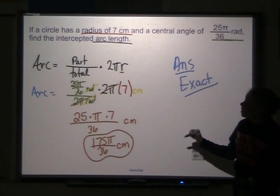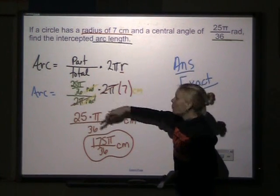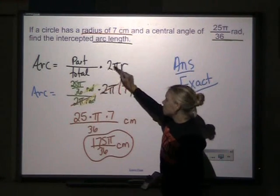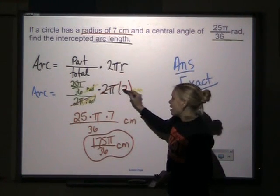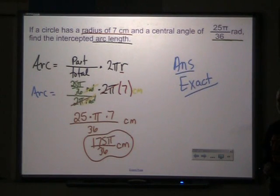If this problem was slightly different and instead I gave you the same information and asked you for the arc length, I'm going to set this part up the same, but instead of 2πr, I have πr². So that's how those two types of problems can be slightly different.